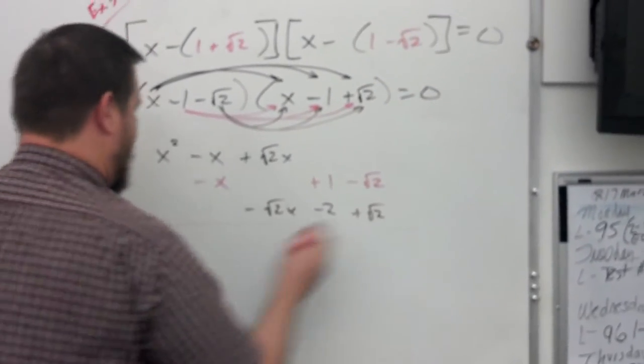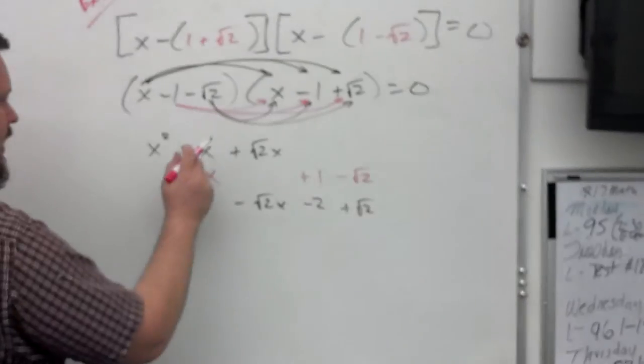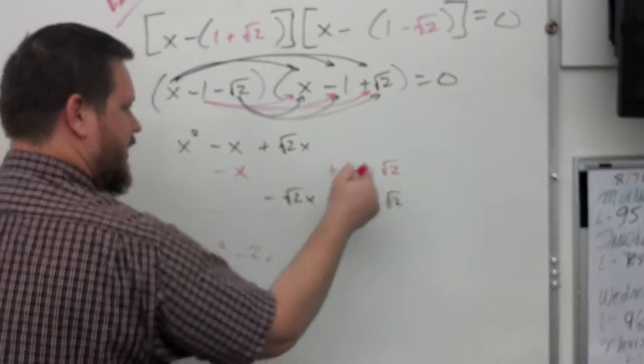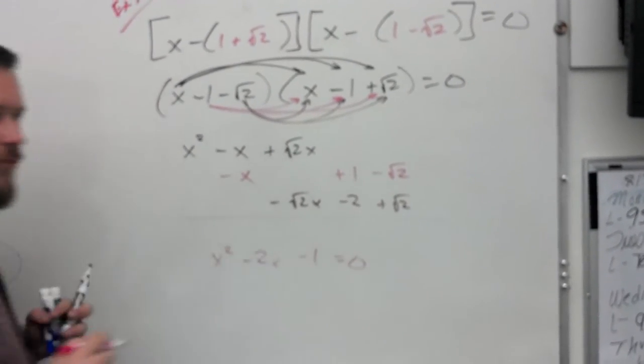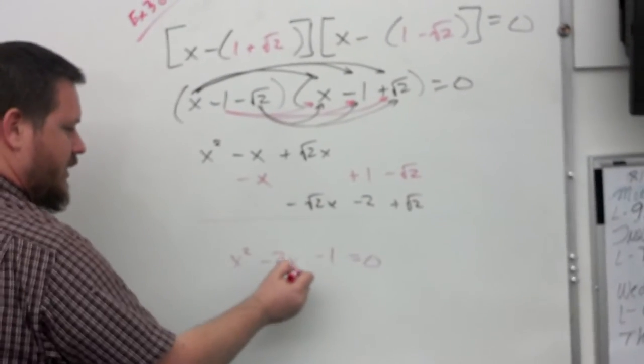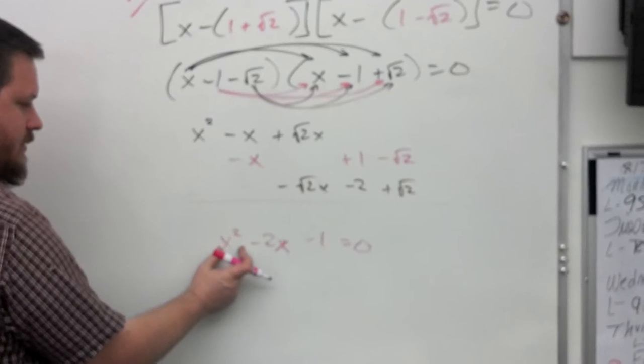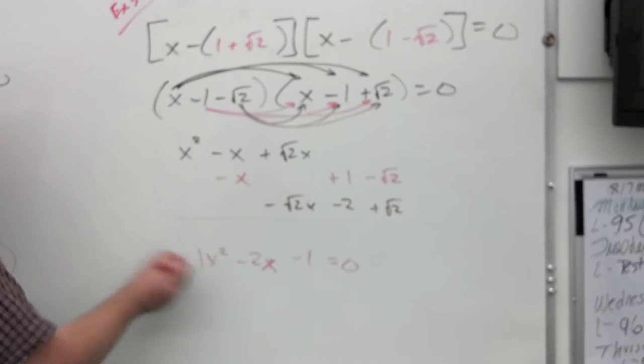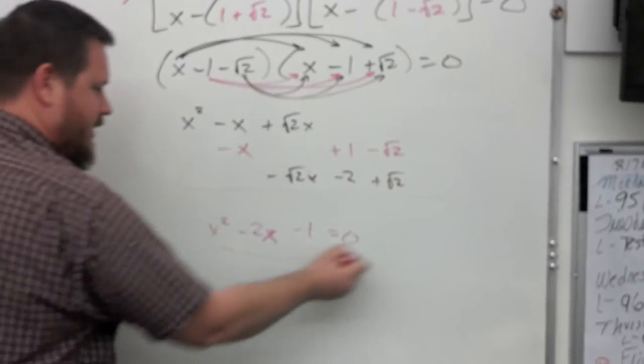X squared minus two X. So add all these up. I've got an X squared term. X squared minus two X. These cancel. Minus one. These cancel. And it asks for a quadratic equation. So I have equals zero. And now I have a quadratic equation with a lead coefficient of one. I don't write that, but now I have to answer the question. How very exciting.